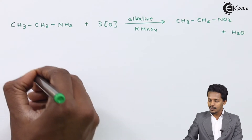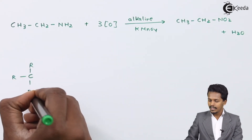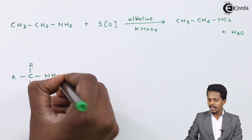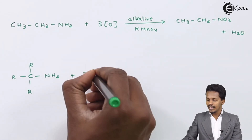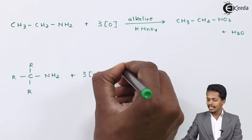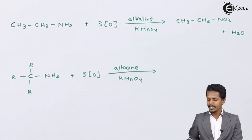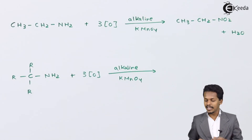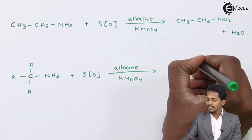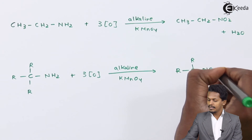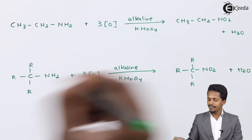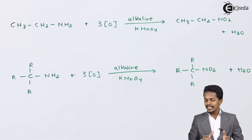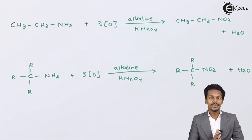Usually this method is used to obtain a tertiary nitroalkane. In the general reaction, if we consider a compound where the NH2 group is attached to a tertiary carbon atom, and we react it with alkaline KMnO4, the three nascent oxygen atoms convert the NH2 group into NO2, giving us a tertiary nitroalkane.